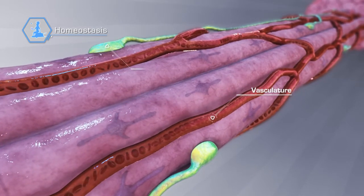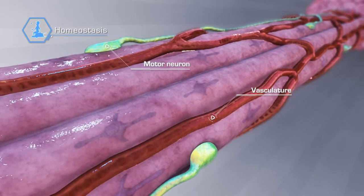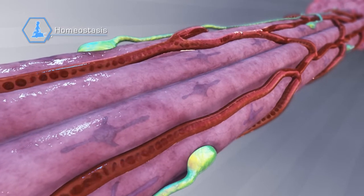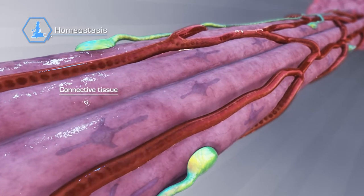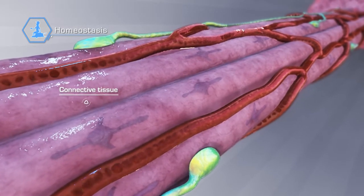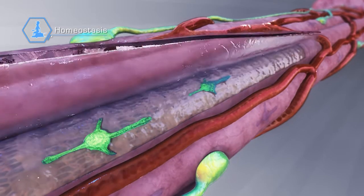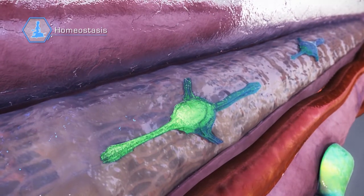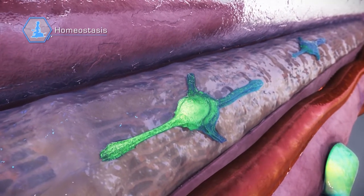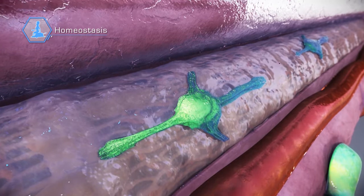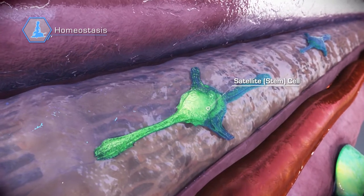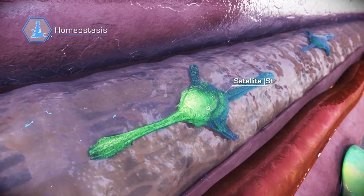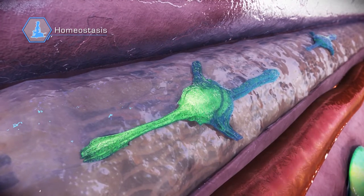Individual myofibers are covered by a basement membrane, which is continuous with the endomycium connective tissue layer. Peeling away the basement membrane reveals the myofibers and the skeletal muscle stem cells, also known as satellite cells, which play a critical role in muscle fiber repair.